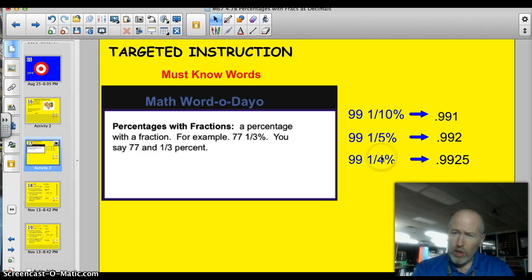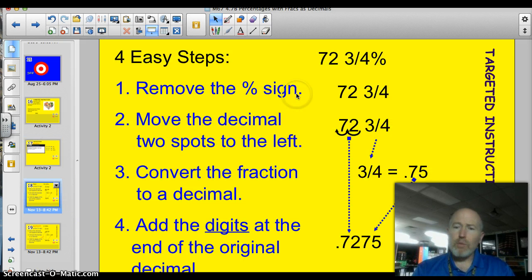Same thing here. A quarter is 0.25, right? Well, here's your 99%. Convert that to a decimal, 0.99, tack on the 2.5. I think we can handle this. Here's a step-by-step approach to it. Four easy steps. Number one, just like before, remove the percentage sign. So here's my example of 72 and 3 quarters percent. Just step one, remove the percentage sign. So I've got 72, 3 quarters.